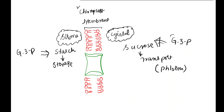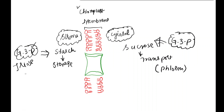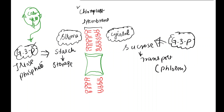The common precursor for both sucrose and starch synthesis is called triose phosphate, also known as glyceraldehyde-3-phosphate. This is the first stable product of the Calvin cycle. The triose phosphate remaining in the chloroplast stroma is used to form starch, while if it needs to be converted to transport form, glyceraldehyde-3-phosphate is moved out.